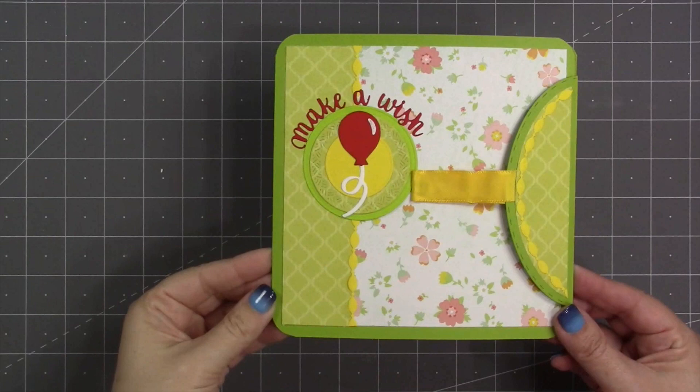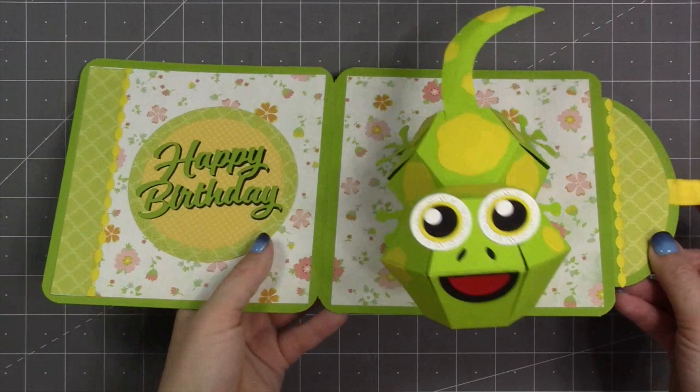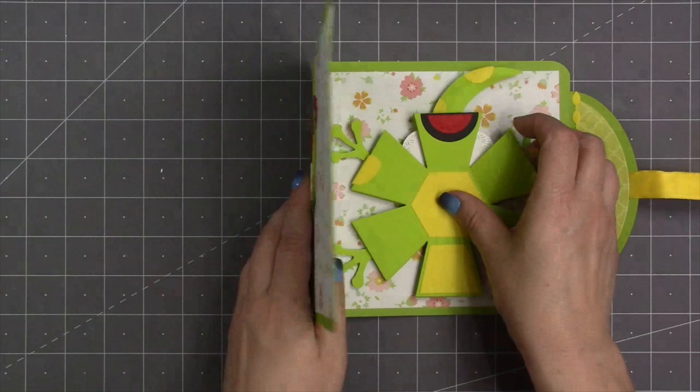There are so many great decorator dies that you can steal out of other sets. This balloon and string came out of our explosion pop-up die set. Then I also used our border blends party, our word set two, and the crosshatch circles. If you need product links, always just check the description box below the YouTube video or follow the link over to the blog post. They're always listed in both places.